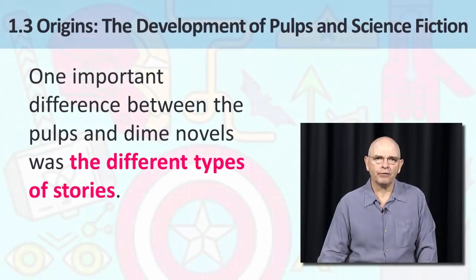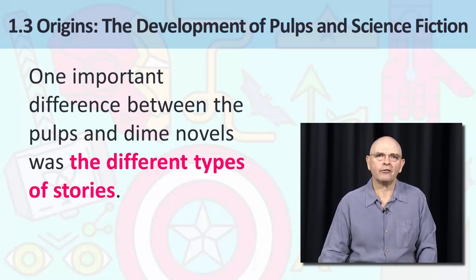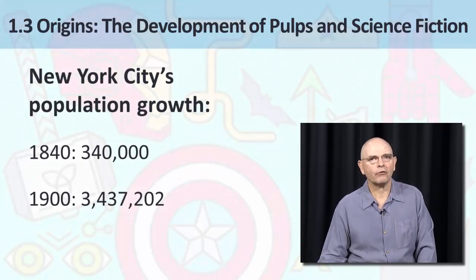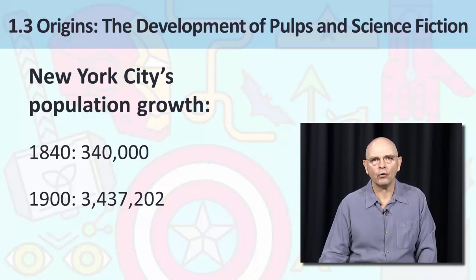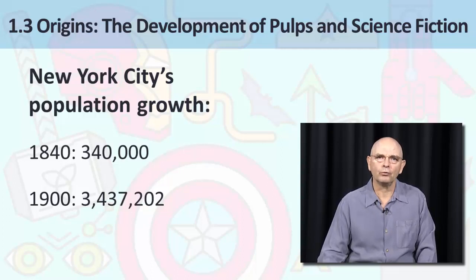One important difference between the pulps and dime novels was the different types of stories. At the turn of the 20th century, that is around 1900, the United States of America was becoming a more urban country than a rural country. Cities had grown at a rapid pace. For instance, New York City grew from a population of around 340,000 in 1840 to 3,437,202 by 1900. This sort of population growth and the change from rural to urban life changed the sort of concerns people had. It also changed the sort of entertainment they wanted.